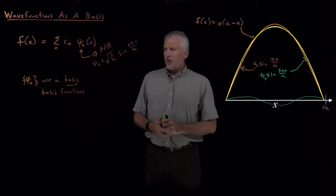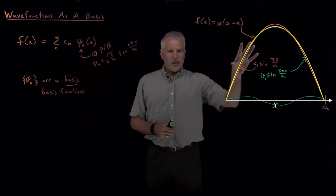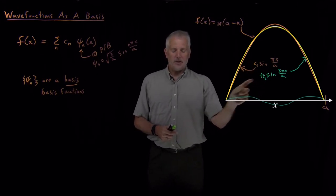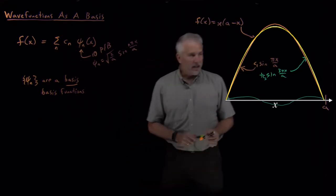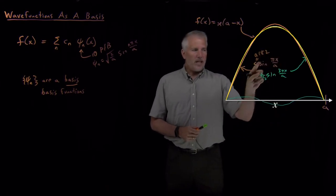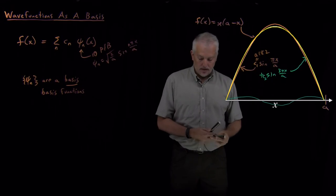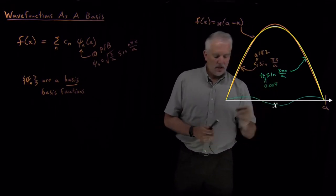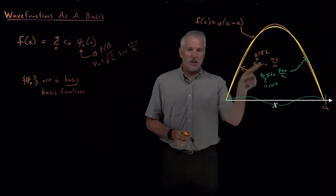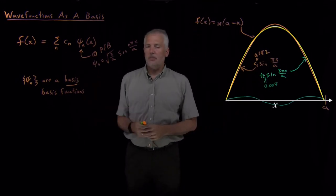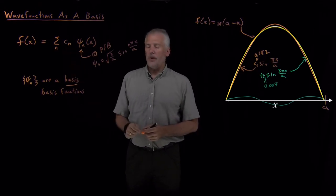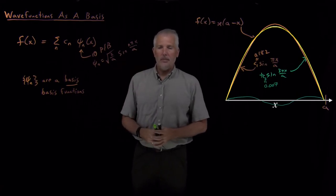That leaves one question: it's only useful if we have a recipe for how to calculate what these coefficients are. When I constructed this example, I used 0.182 times a sine wave and 0.007 of a sine wave with three times the frequency. So how did I know to use those particular coefficients — how do I find the c_n values in general? It turns out that's not very difficult, as long as our wave functions are orthonormal, as we've seen the 1D particle in a box wave functions are.